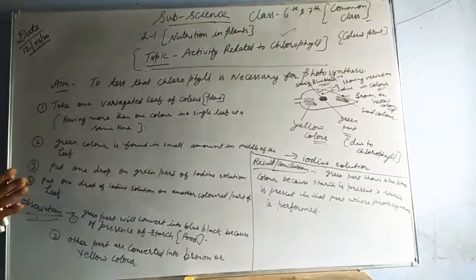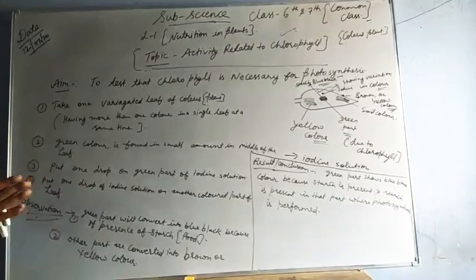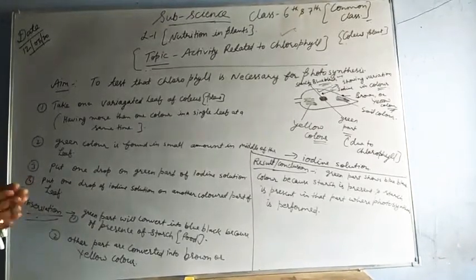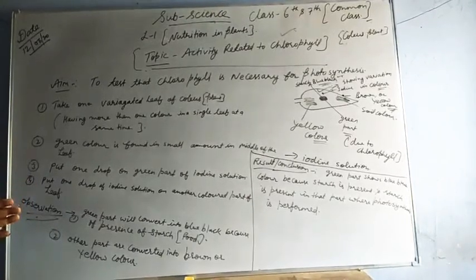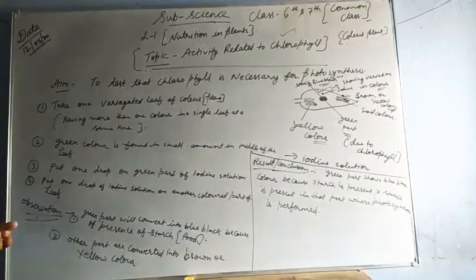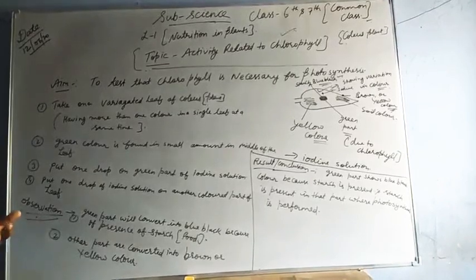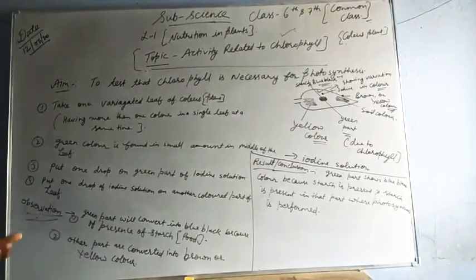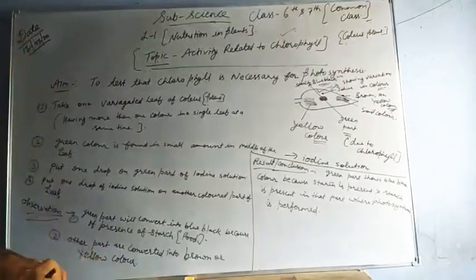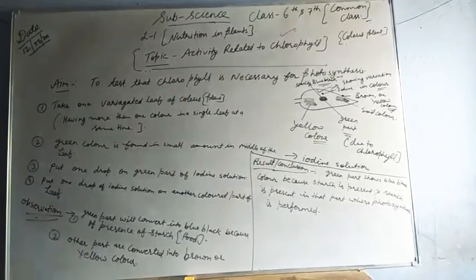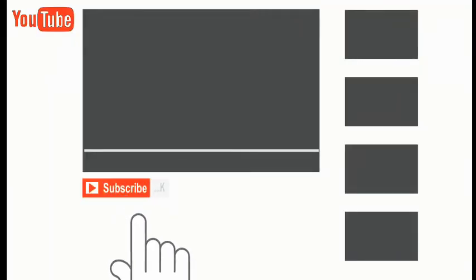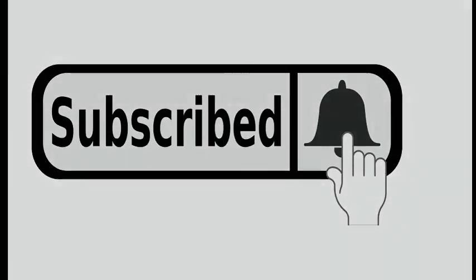Once again, we are taking one leaf with different colors. On the green part, if you put iodine solution, it will convert to blue-black due to presence of starch. Starch is present where photosynthesis is performed, only in green parts where chlorophyll is present. Try to learn this activity today, this is your homework. Thank you very much class.